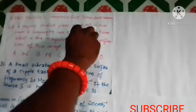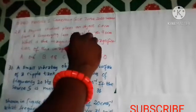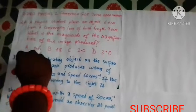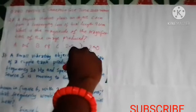Question number 27 says: a physics student places an object 6.0 cm from a converging lens of focal length 9.0 cm. What is the magnitude of the magnification of the image produced? A: 0.6, B: 18, C: 2.0, and D: 3.0.